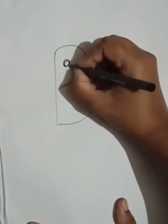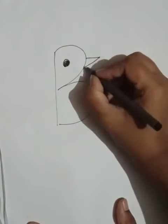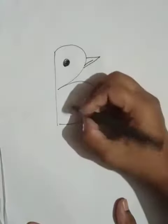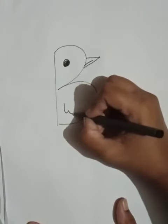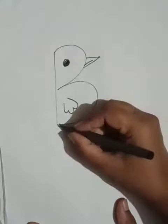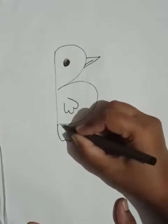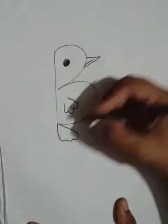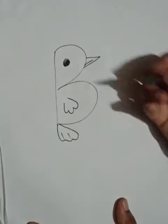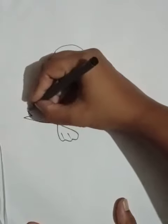Make a small beak. Next, add a feather. Next, small feet like this. Next, make a small tail like this.